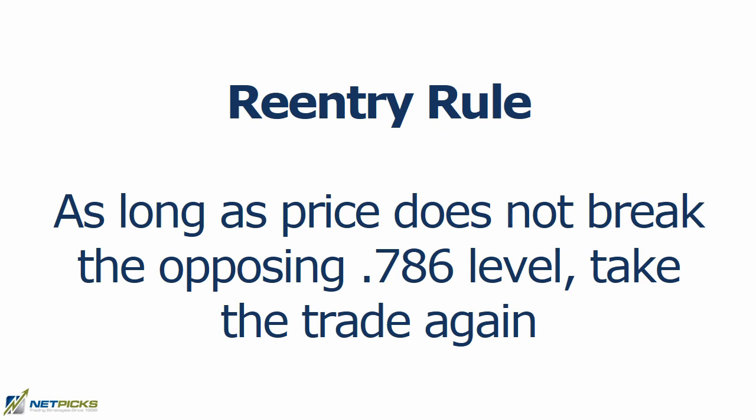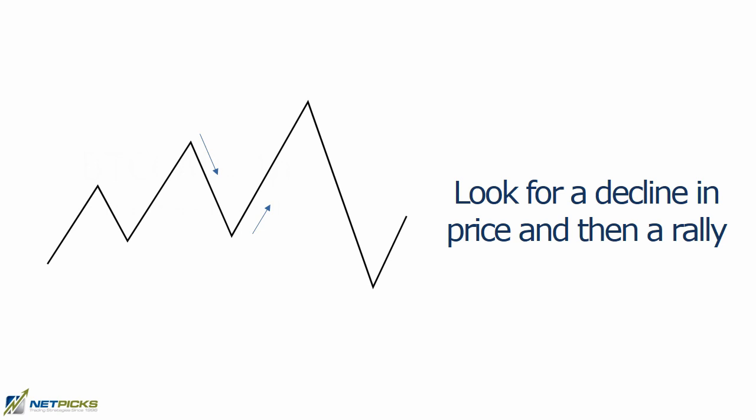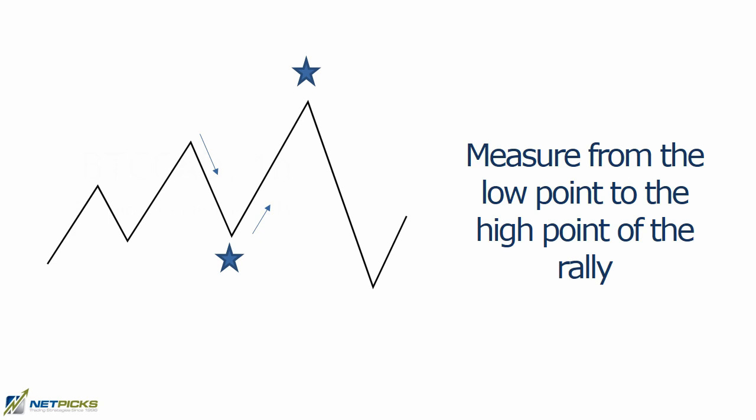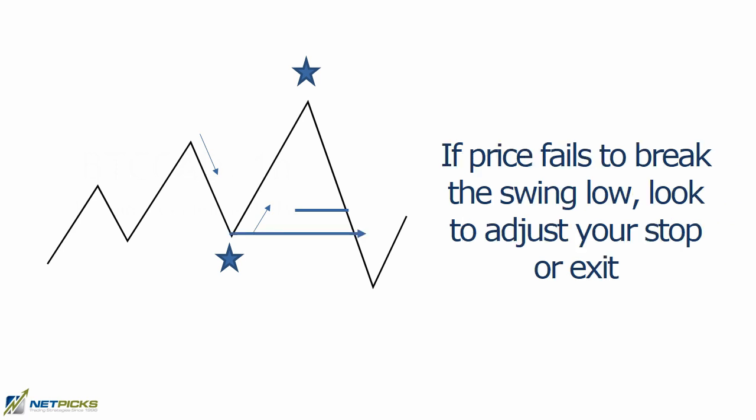If you enter at 0.786 and get stopped out immediately, as long as price does not hit the 0.786 level in the opposite direction, you can look to re-enter. For the selling rules, we look for a decline in price, then the rally to start. We measure from the low point to the high point of the rally and look for price to break the 0.786 level — that's your entry. If price fails to break the swing low, we need to adjust our stop or exit because we might be finding some support.